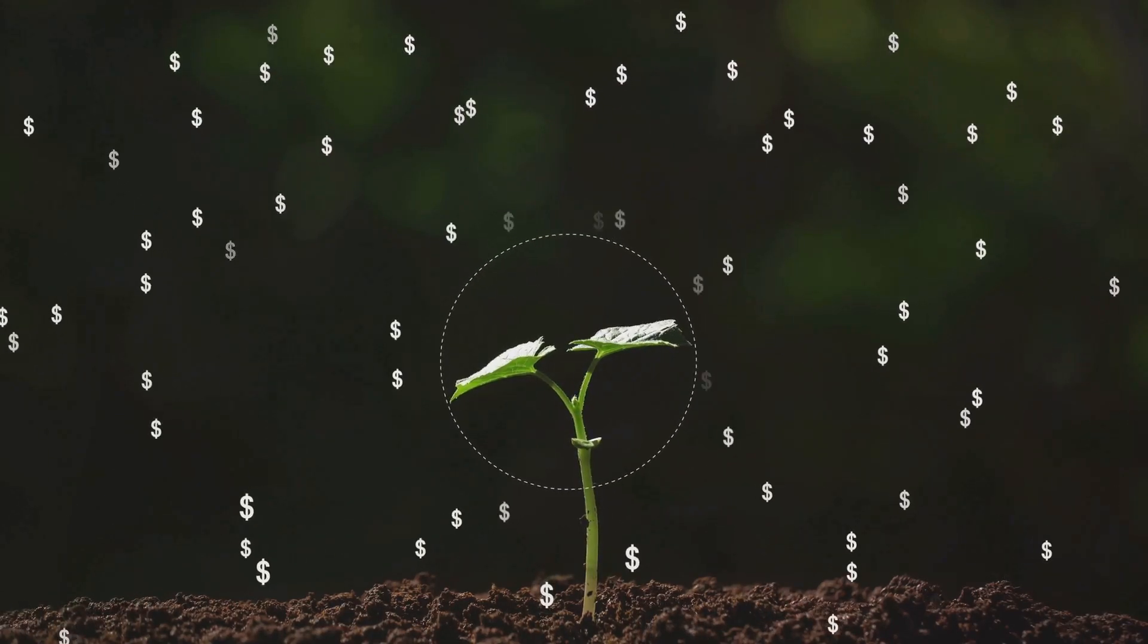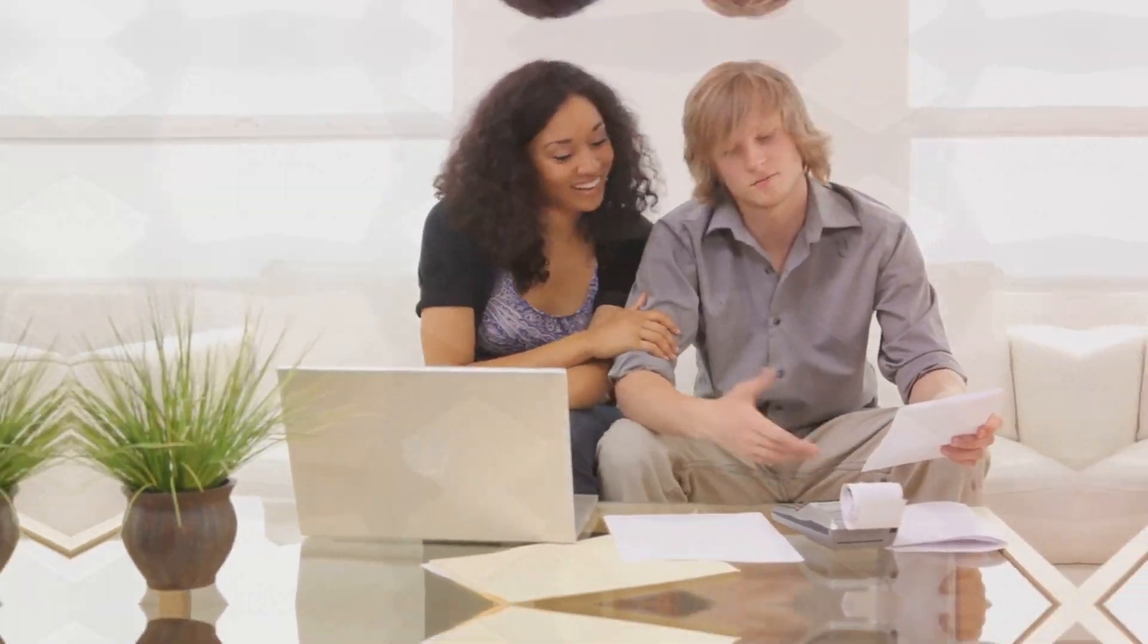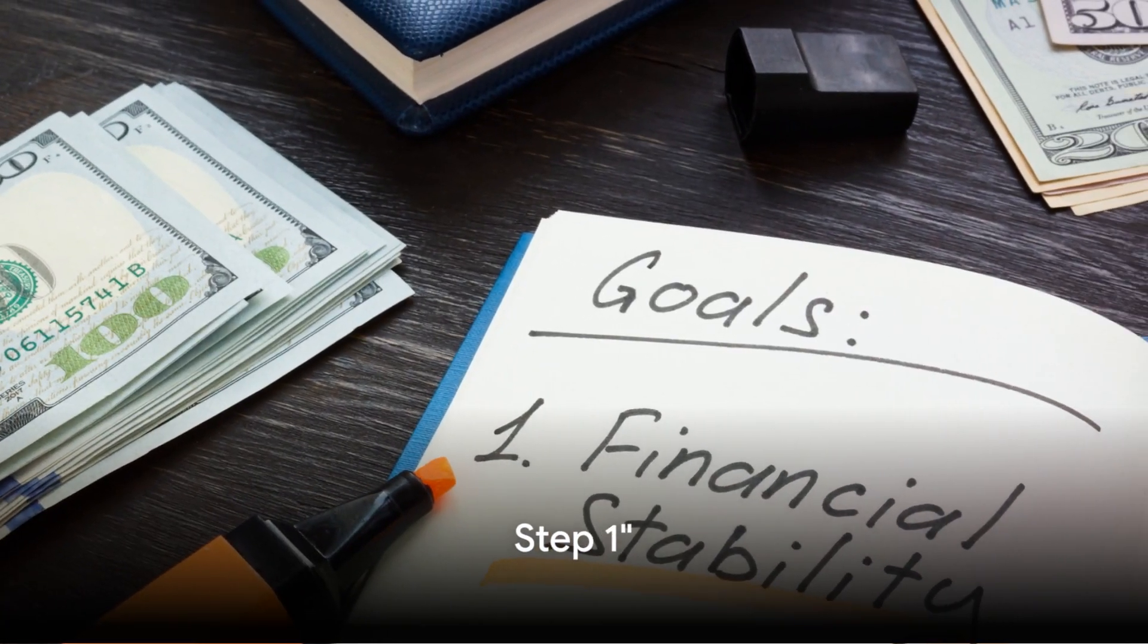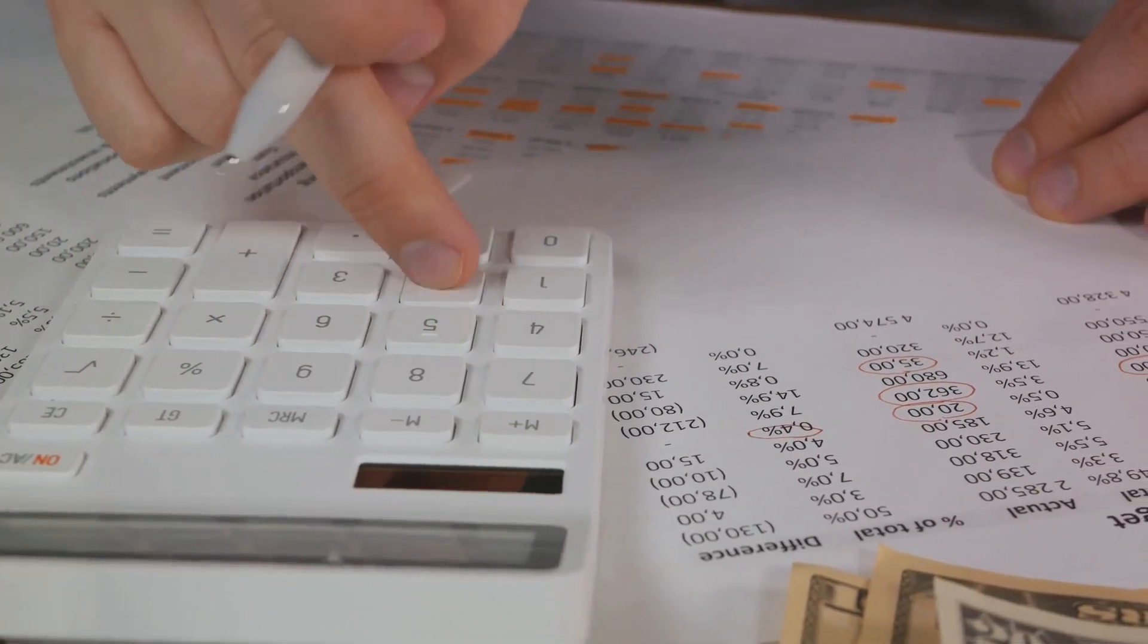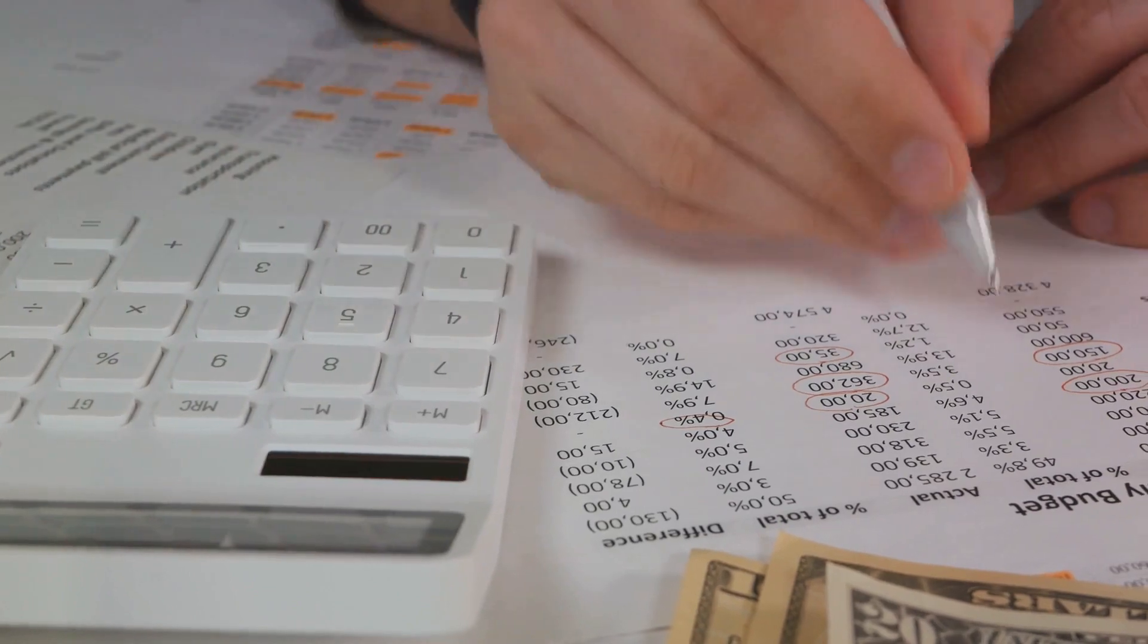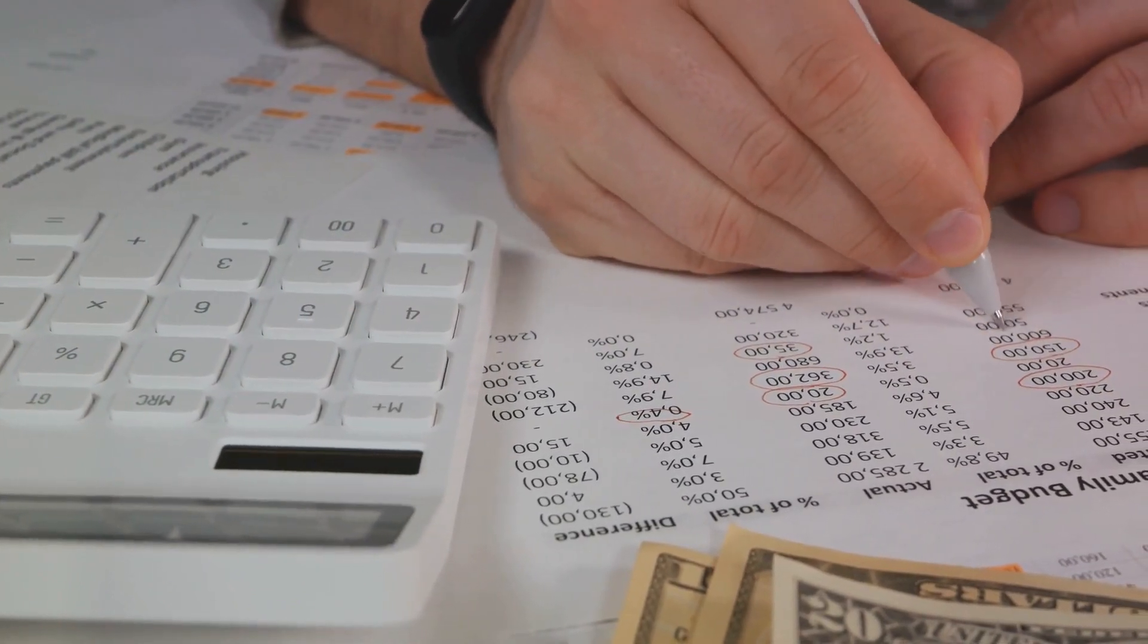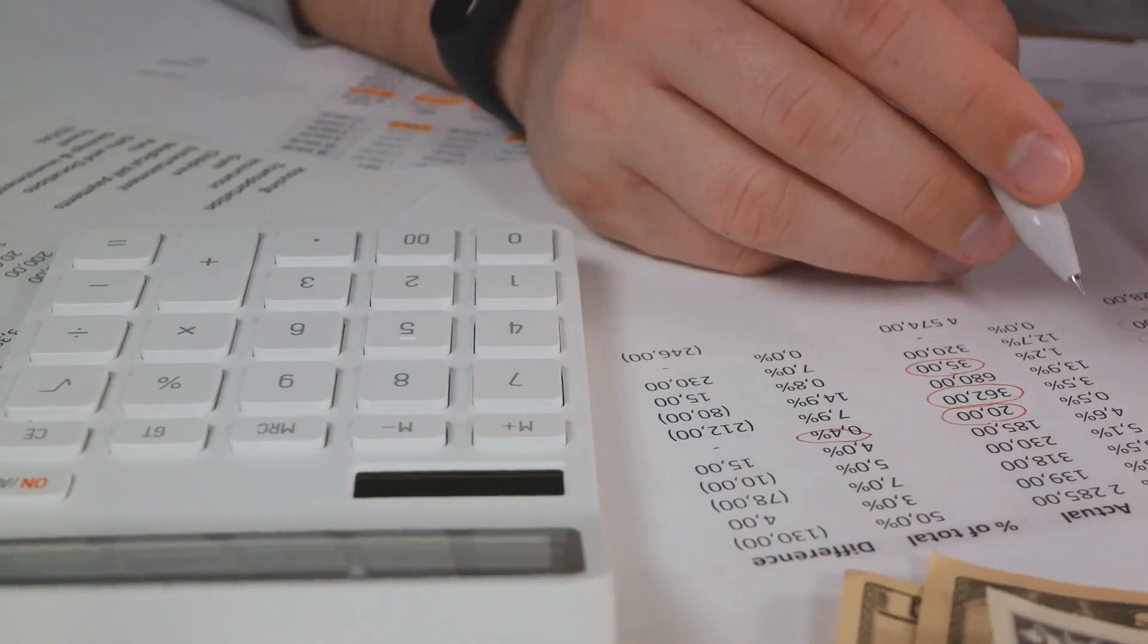So how do we start visualizing our financial goals? It's quite simple. We create a financial vision board. The first step to creating your financial vision board is to clearly define your financial goals. Now you might be wondering, why is this important? Well, without a clear destination in mind, it's easy to lose your way. It's like embarking on a journey without a map or GPS.